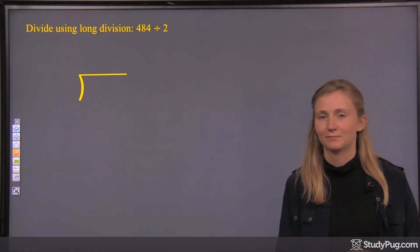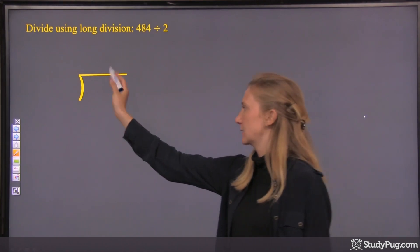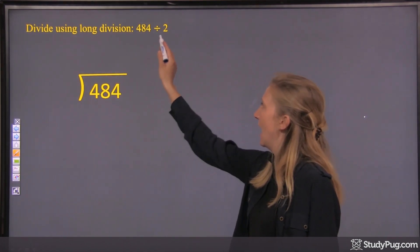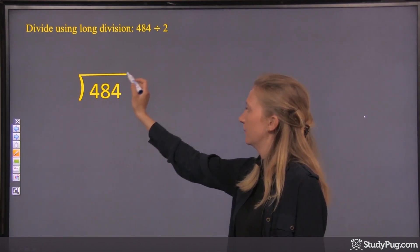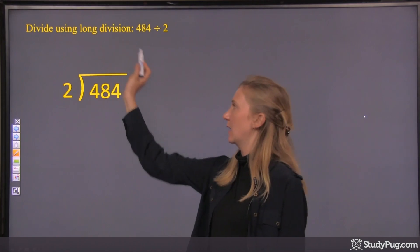Where do we put the numbers? Well, the 484, the dividend, goes inside the box. And then the divisor goes right there outside the box. And we'll leave this space up here for the quotient.